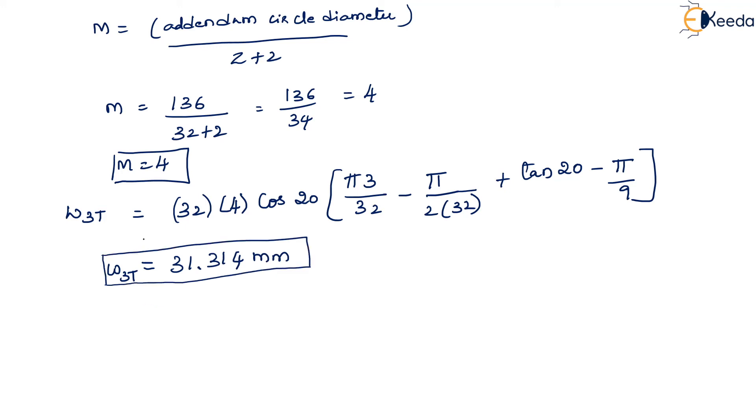They have already given the average value of span width as 31.12 mm. So the error we can calculate by the difference between this width value and the average value which they had already given in the question. So error is equal to 31.314 minus 31.120. The error will be 0.194 mm.